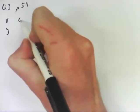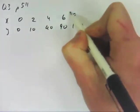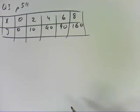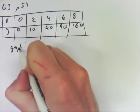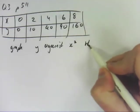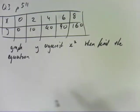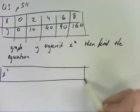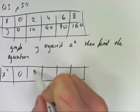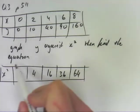So question 3 on page 11 has a table of values. And it says, graph y against x squared, then find the equation. So all you do is you do an x squared column, or row, I should say. So I'm going to line it up down here. 0 squared is 0. 2 squared is 4. 4 squared is 16. 6 squared is 36. And 8 squared is 64. And then I'm going to graph using this and this.